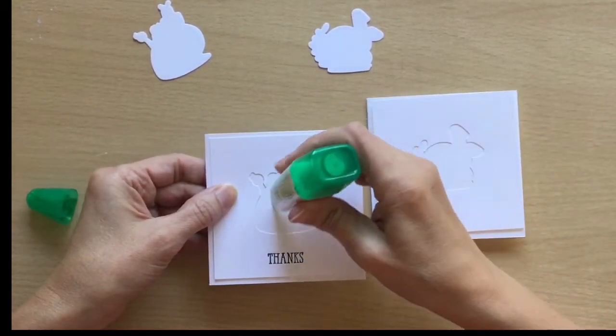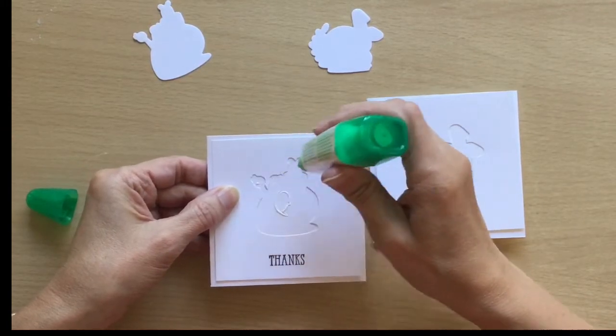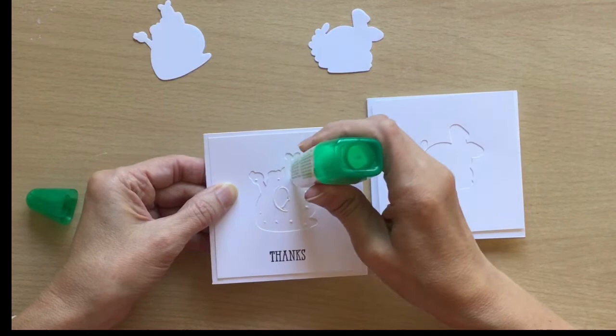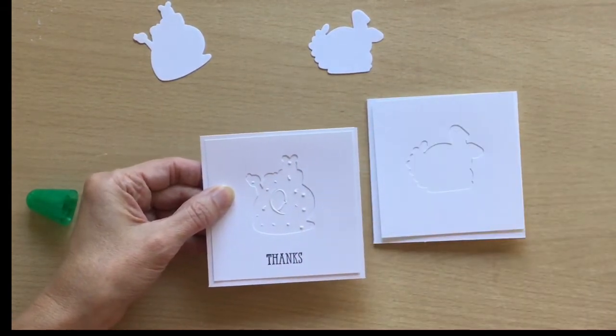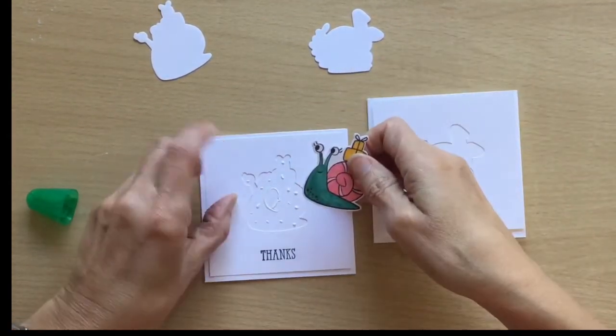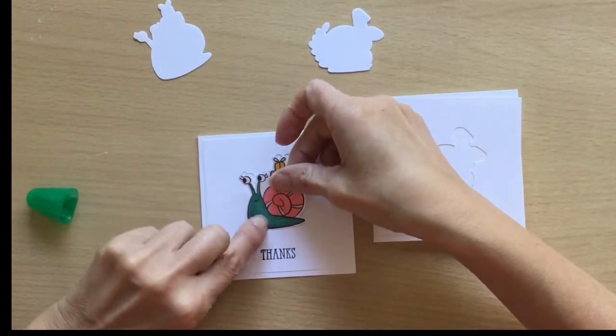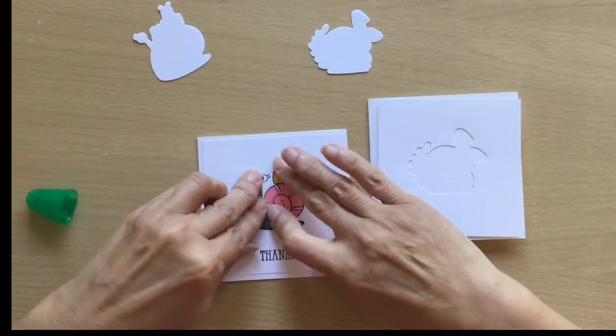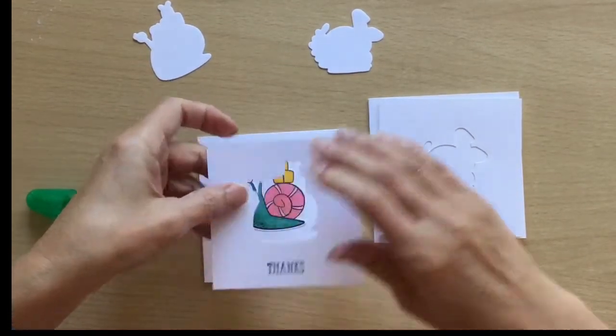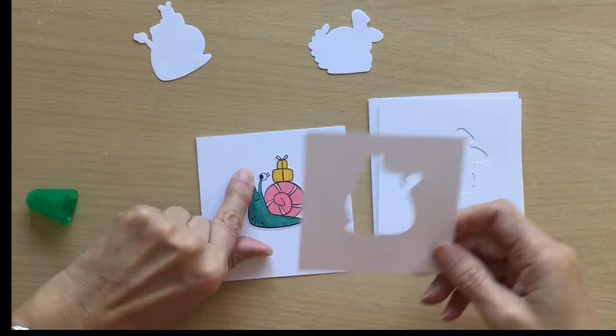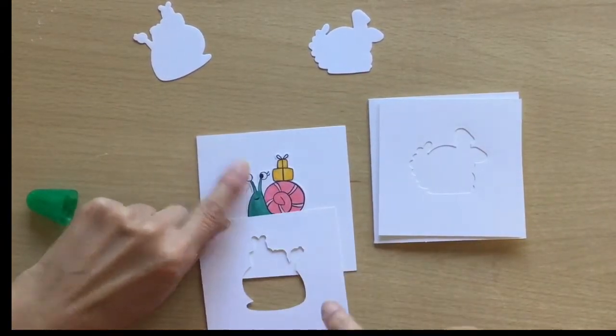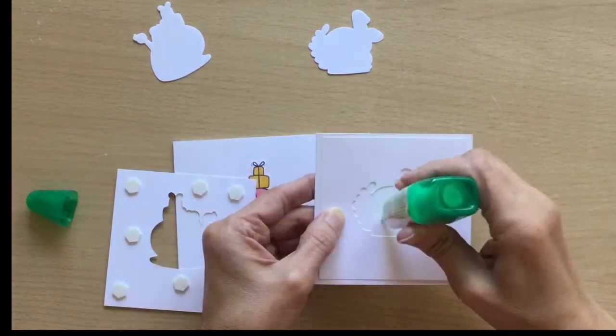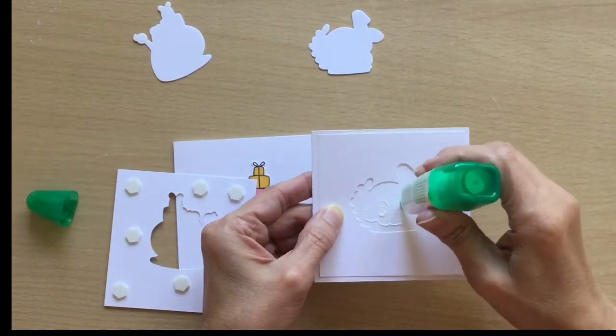And then we're going to put some glue in the gap. Try not to put too much. It's a bit tricky actually because this is a brand new glue, it's coming out nice and fast. And then we're going to put our die cut image into the gap like so. Then we can take this off. Then on the back we're going to put some dimensionals.